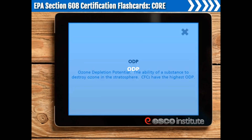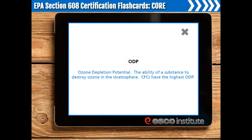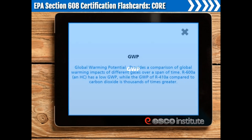ODP. ODP stands for ozone depletion potential — the ability of a substance to destroy ozone in the stratosphere. CFCs have the highest ODP. GWP. GWP stands for global warming potential. GWP provides a comparison of global warming impacts of different gases over a span of time. R-600a, an HC refrigerant, has a low GWP, while the GWP of R-410a compared to carbon dioxide is thousands of times greater.